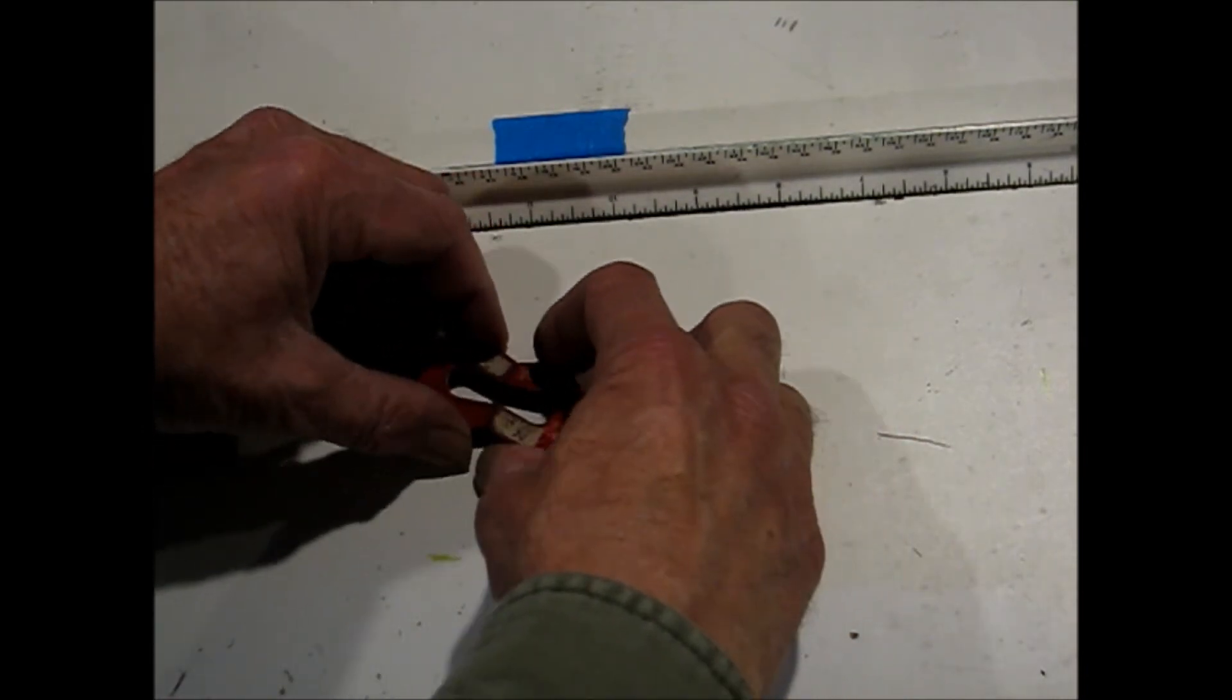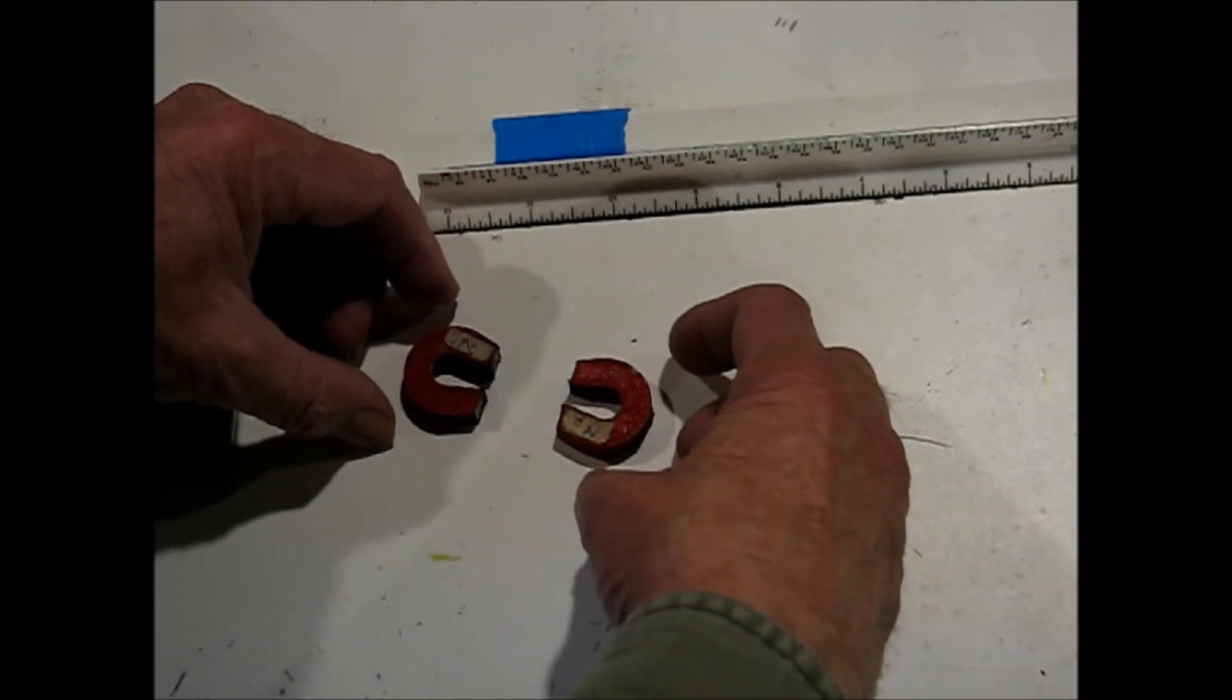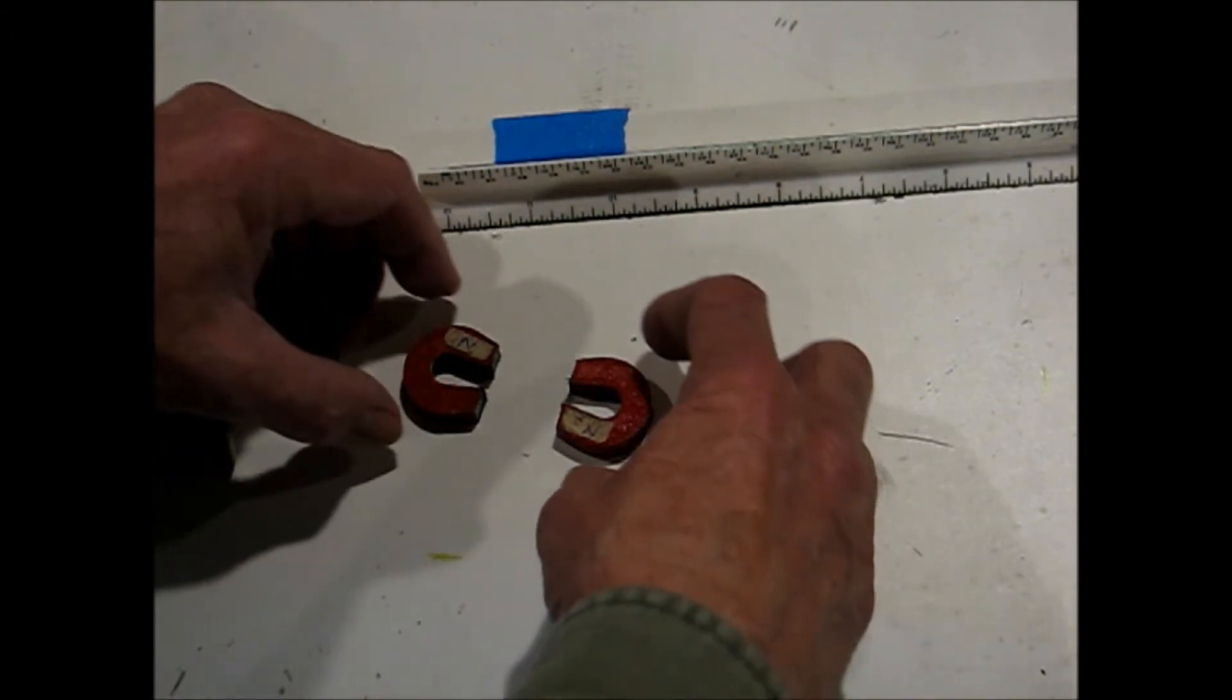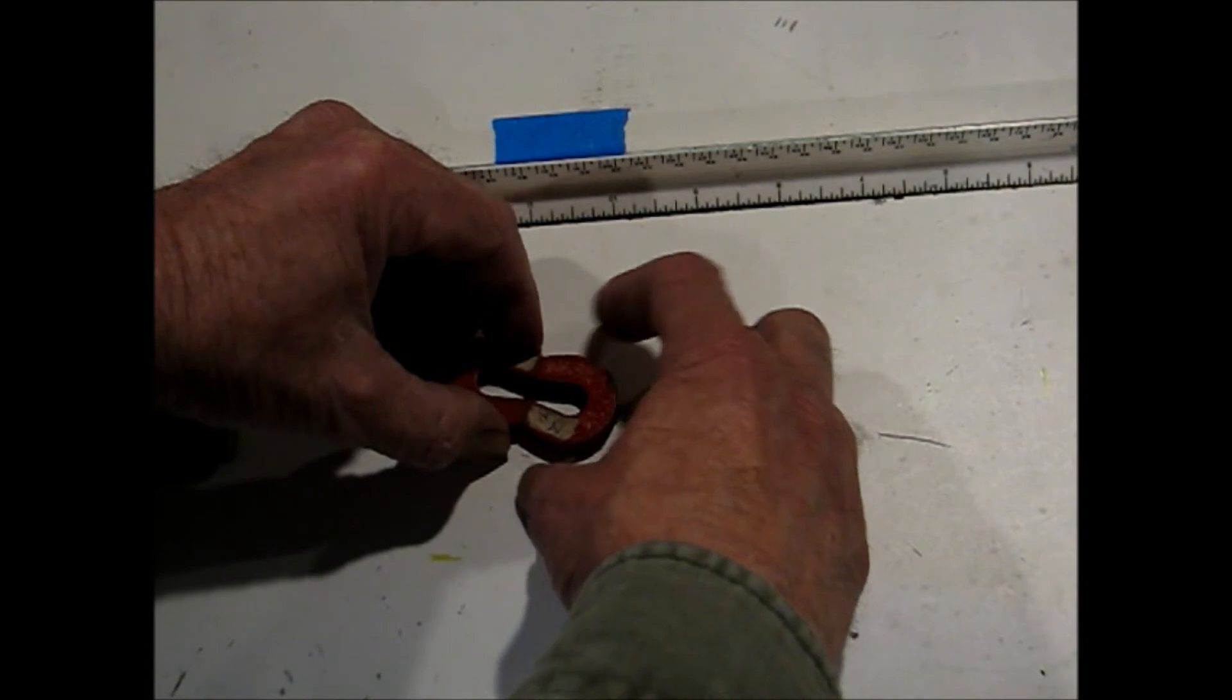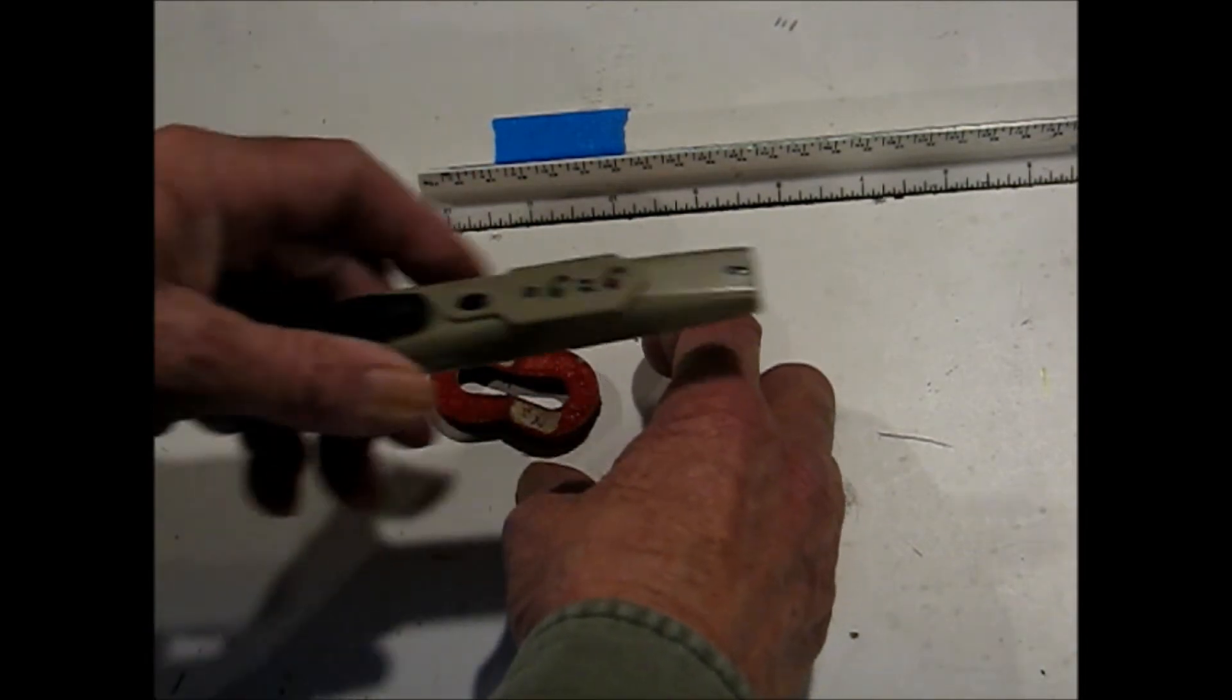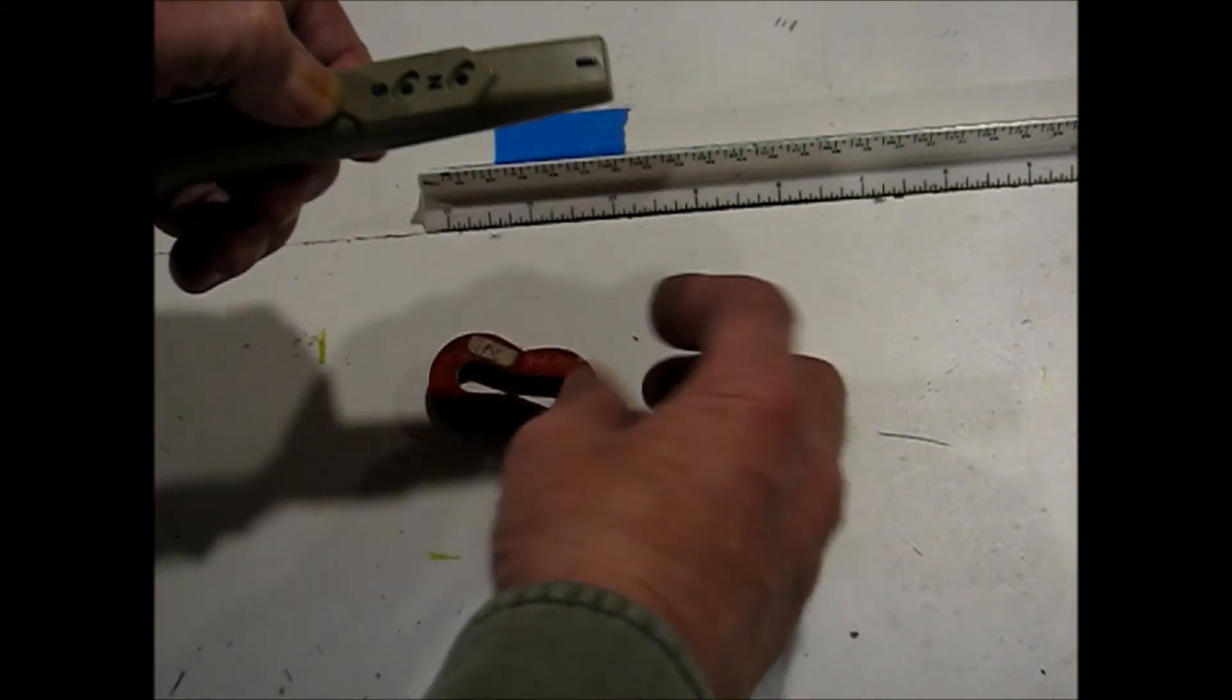Here I have two very weak Alnico magnets. They are a composition of aluminum, nickel, and cobalt, and they are not very strong. Here we have a north to a south and a north to a south, and this is a magnetic polarity checker.